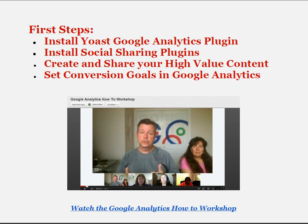The first steps: if you're running a WordPress blog you should install the Yoast Google Analytics plugin, install your social sharing plugins, create and share high-value content, and set conversion goals in Google Analytics. You can get detailed information on this by watching a workshop for Google Analytics hosted by Chris Lang on his Hangouts on Google Air, where the panel also included Courtney Engel and Dottie Scott. That workshop will give you details about how to set up the social sharing plugins along with the exact setup instructions for the Yoast Google Analytics plugin.